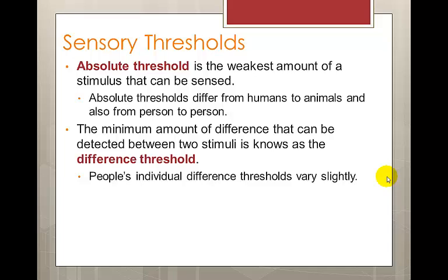The minimum amount of difference that can be detected between two stimuli is known as the difference threshold. For example, you might be eating pasta with five teaspoons of parmesan cheese on top. If you wanted to make your pasta taste even cheesier, you'd have to add more cheese — but how much more? Let's say in order to make a noticeable difference to the pasta's taste half the time, you would have to add one teaspoon of cheese. That one teaspoon would be the difference threshold.